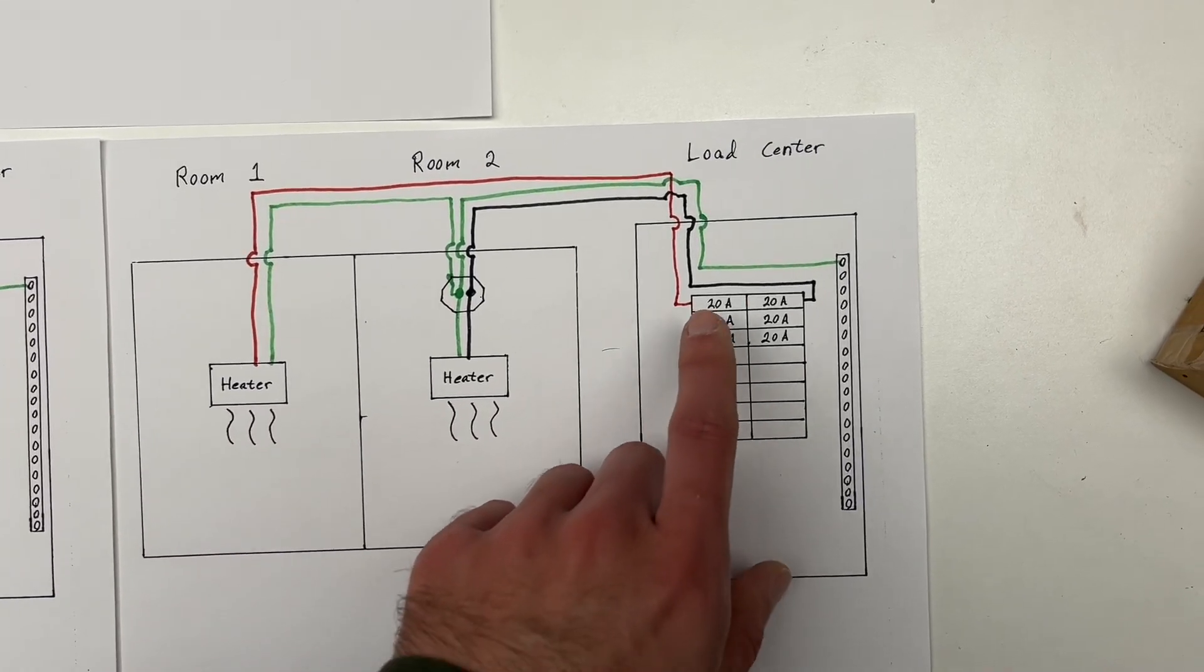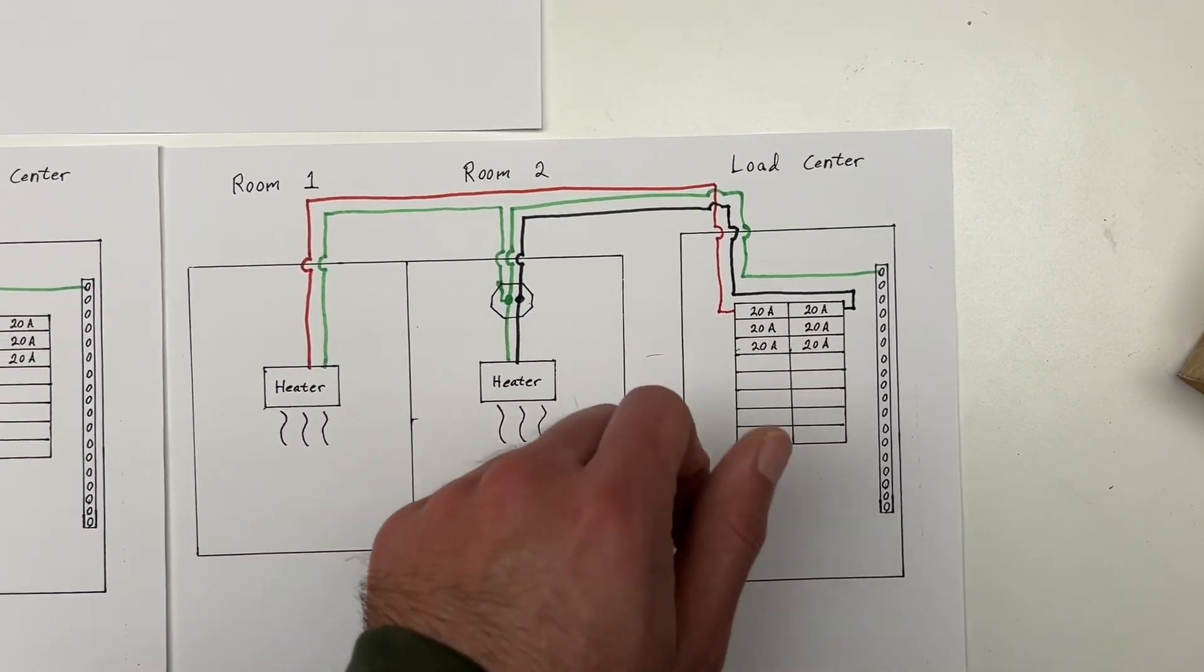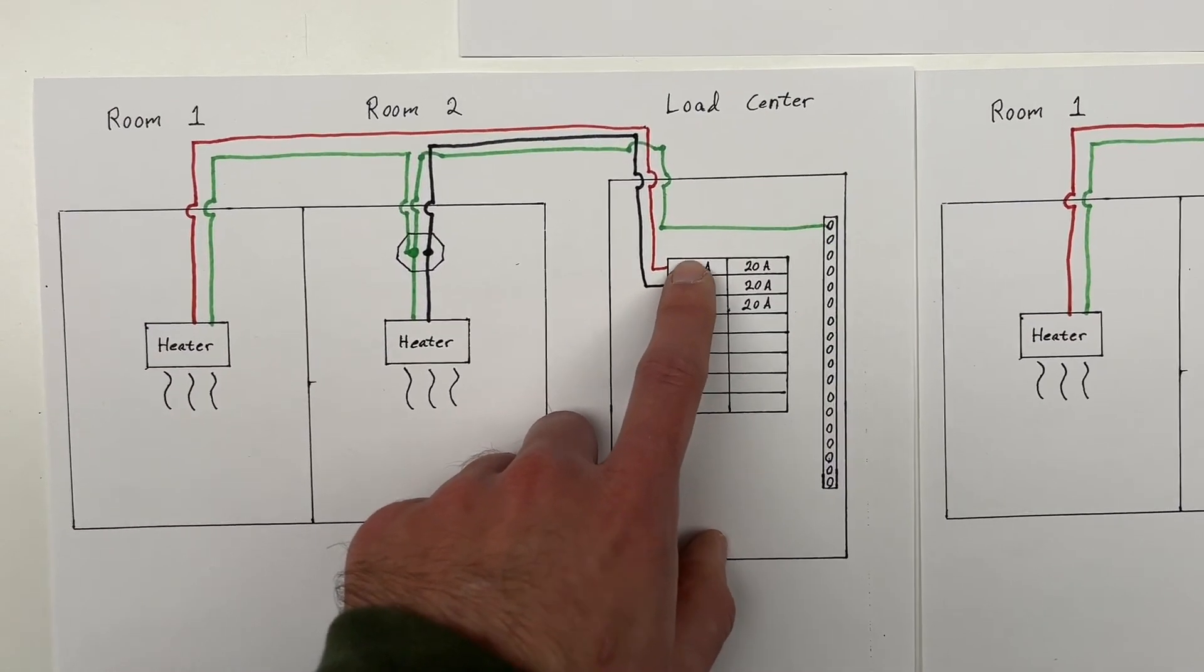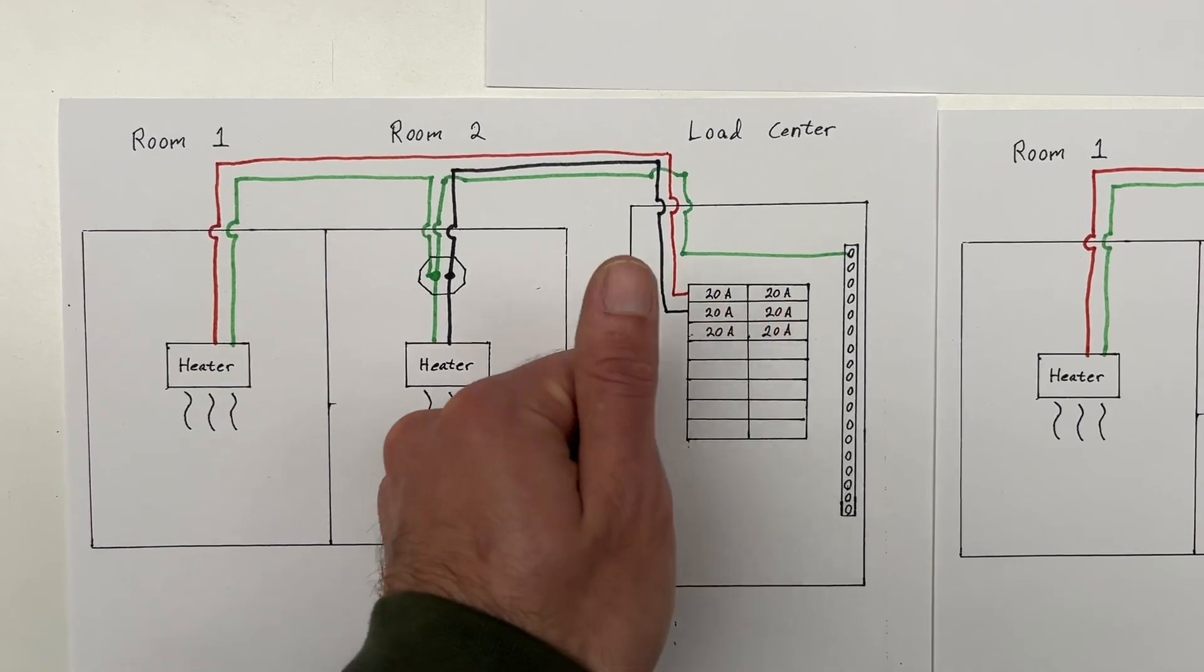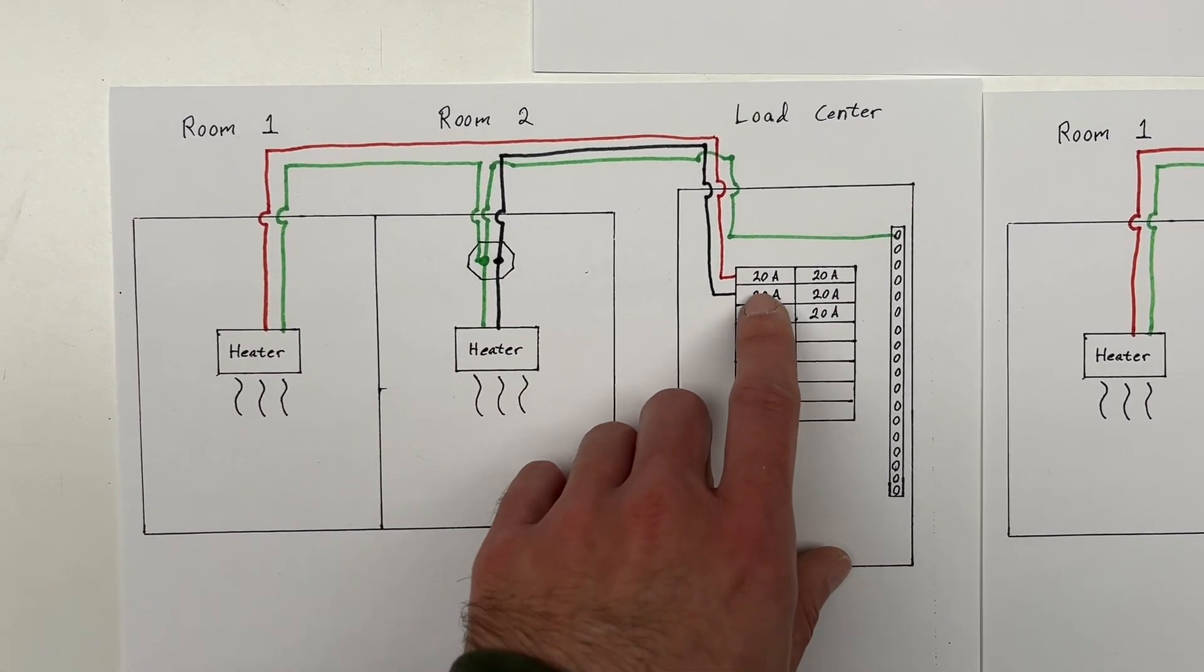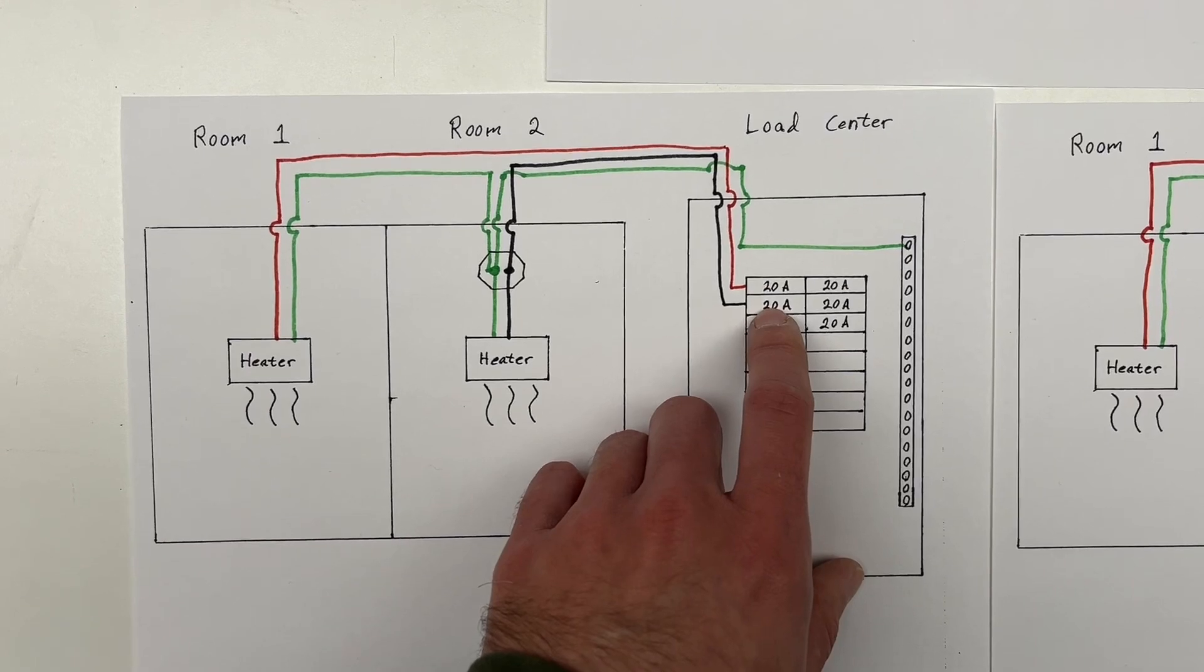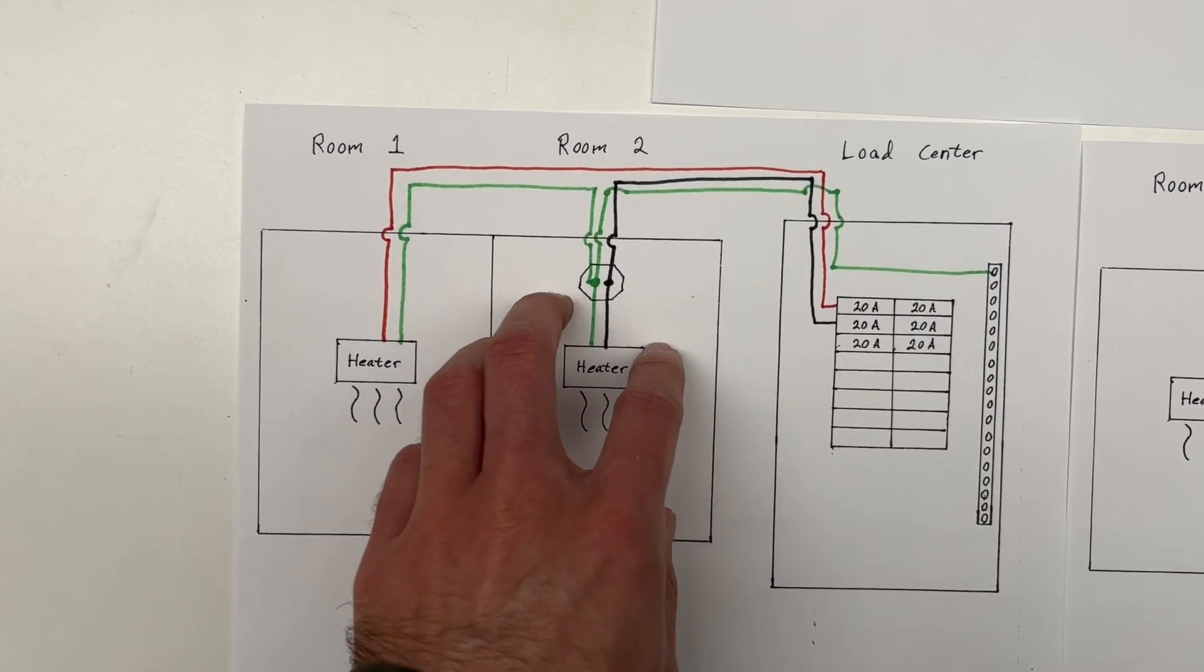One, you cannot switch these off together. In other words, you cannot use a dual-pull breaker. That's what you need to do here. These two breakers are drawn as individual breakers, but really there's one lever. These need to be dual-pull. The reason for that is that if these were separate, you could turn off the black hot wire. That would de-energize room two, or at least it would appear to de-energize room two.